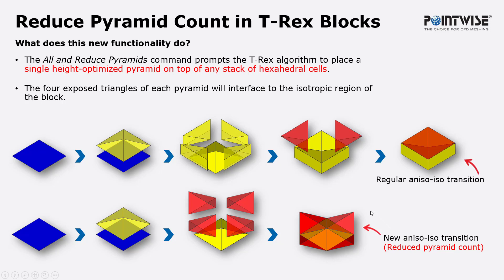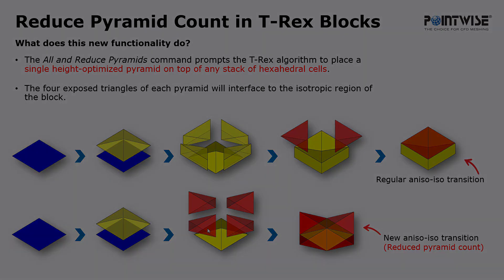The second image shows the decomposition used when the third TREX option is selected, that is All and Reduce Pyramids. In this case, the TREX solver will take the last quad face shown by the last hexahedral cell and put one pyramid on top of it and then four TETs on top of that. As you can see, this one hexahedral cell will present only one pyramid before it is passed to the isotropic TET mesher.